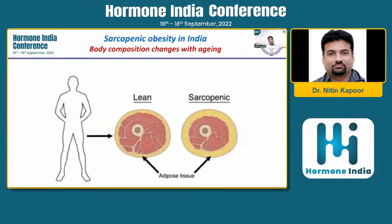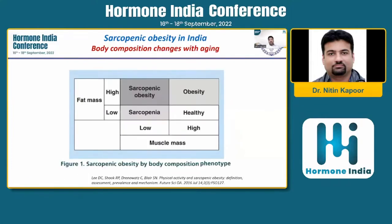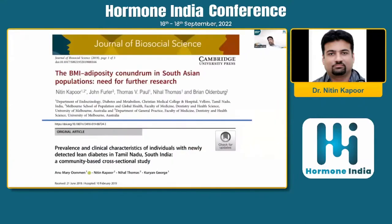When we talk of the normal process of aging, as we age the fat content in the body tends to increase whereas the muscle content tends to decrease. If I plot this in a simple two-by-two table, we see that anybody with low muscle mass — or low muscle mass in combination with high fat mass — would be said to have sarcopenic obesity. The problem gets more compounded in the Indian population, where we are already prone to have much higher body fat than other populations despite having a lower BMI.